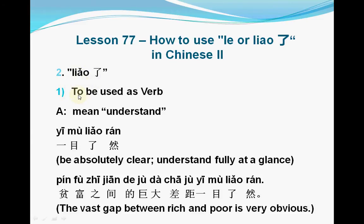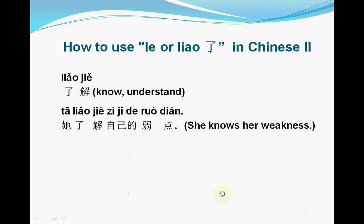The first usage — 了 is used as a verb. As a verb, the first meaning is 'understand'. For example, 一目了然 (yī mù liǎo rán). 一目 means 'a glance', and 了然 means 'understand'. So 一目了然 means 'very clear' or 'very obvious'. Another example is 了解 (liǎojiě). 了 also means 'know' or 'understand'.